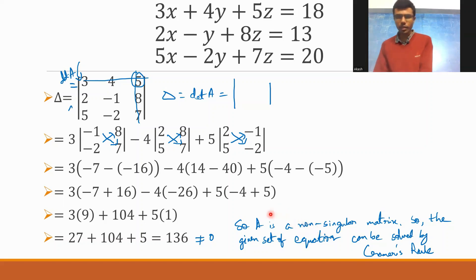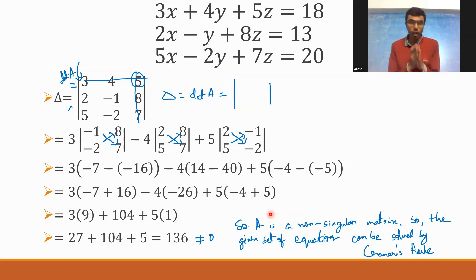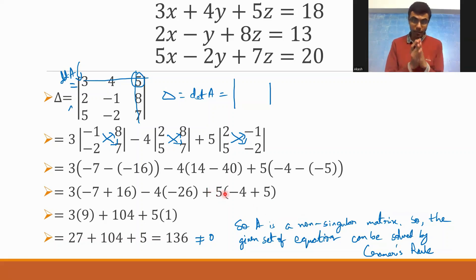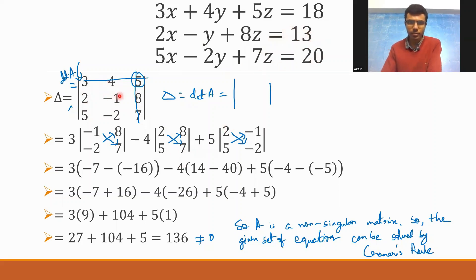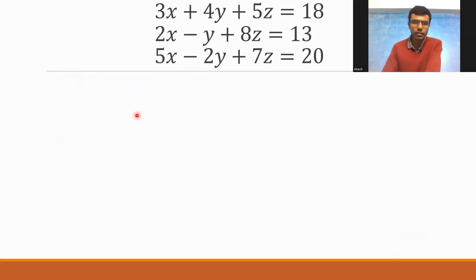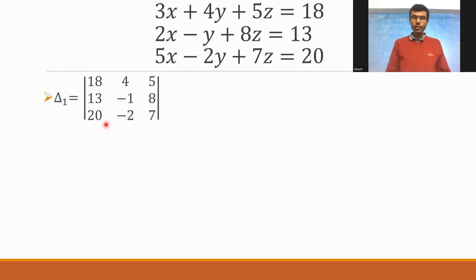Next I need to find three more determinants: delta 1, delta 2, and delta 3. For delta 1, I'm going to replace the first column of delta with the elements of D — basically 18, 13, 20. Instead of 3, 2, 5 in the first column, there will be 18, 13, and 20. The numbers are bigger as I mentioned, so stay focused.